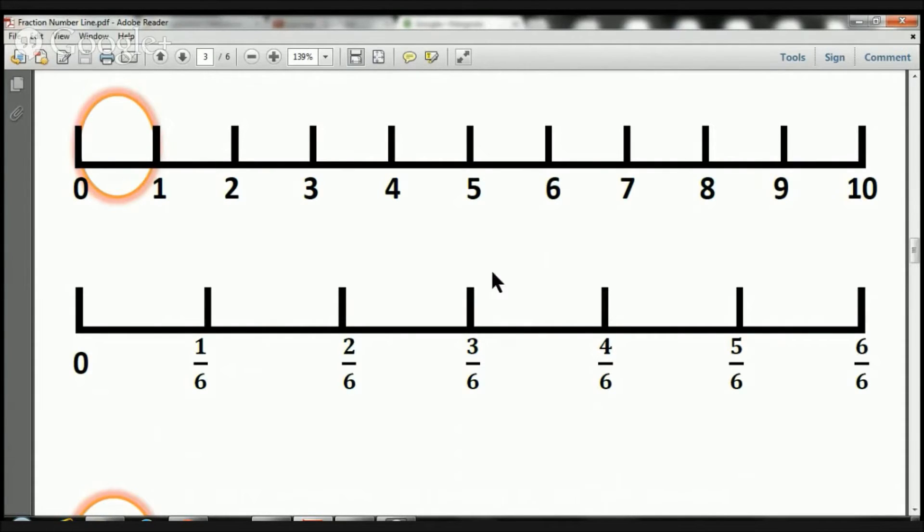From 0 to here, we've got 1, 2, 3, 4 pieces. That's going to be 4 over 6.